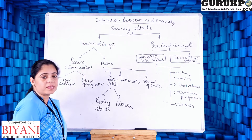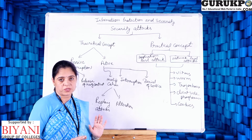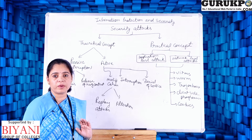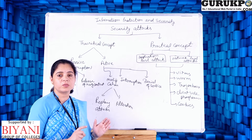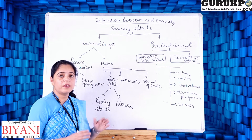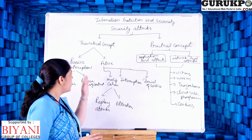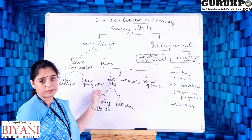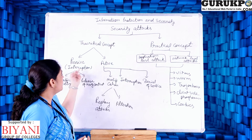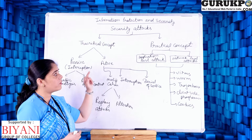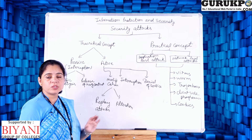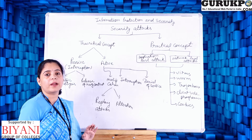As the name indicates, passive means silently observing the information. There is no modification, no alteration, and no replay — only silently observing what information is going from sender to receiver. This type of attack is called a passive attack. These attacks are very dangerous because we cannot detect them since the attacker silently observes the information. We can also call these attacks interception, which means no modification on the contents of the data or messages.